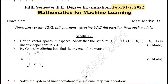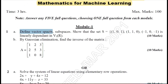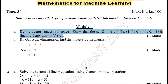Moving on to Module 1, Question 1A: define vector space and subspaces, and show that the set S is linearly dependent. You are required to define vector space and subspaces — I have already defined vector spaces in the previous video, so you can refer that definition. To show that the given set is linearly dependent, I have explained how to determine linear independence and dependence in the previous video.